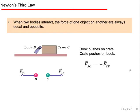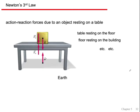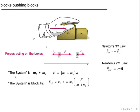When two bodies interact, don't forget: the force of book B on crate C is equal to the force of crate C on book B. Action-reaction forces — be careful. The force of the Earth on this body is equal to the force of the body on the Earth, and the force of the table on the block is equal and opposite to the force of the block on the table. It's always A on B equals B on A.